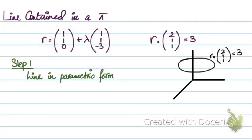So how do you show that a line is contained in a plane? Let's say I have this line over here: r equals (1, 1, 0) plus lambda (1, 1, minus 3). And I have to see if this line is in the plane r · (2, 1, 1) = 3.